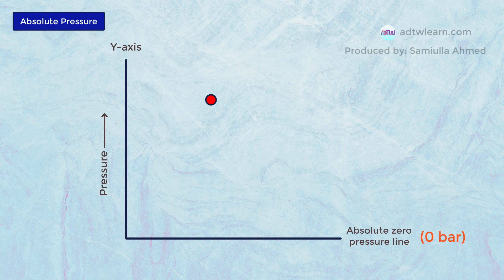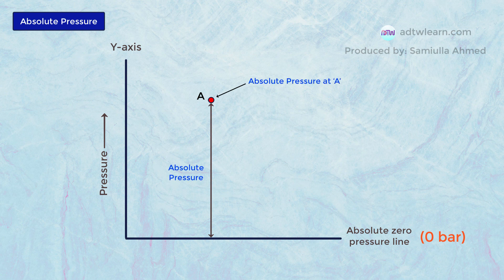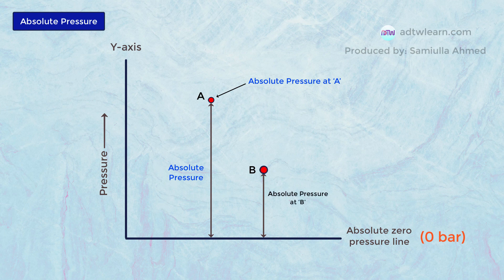Suppose if we measure pressure at point A from the absolute zero line, then the value of the pressure at point A is called the absolute pressure at point A. Consider another point B — if we measure the pressure value at point B from the zero line, this pressure is also called absolute pressure at point B.